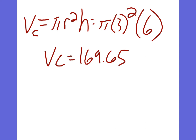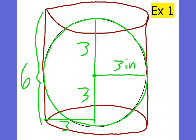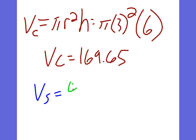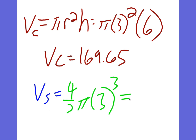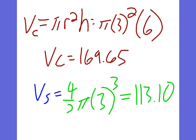Now let's find the volume of the sphere — V sub S. The volume of the sphere is 4/3 pi r cubed, so 4/3 times pi times 3 cubed, which gives us 113.1. His answer makes sense because if the sphere is inside of the cylinder, you know the volume is going to be less.